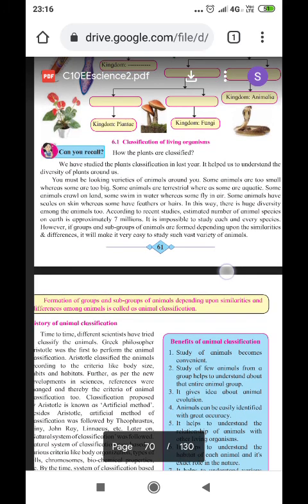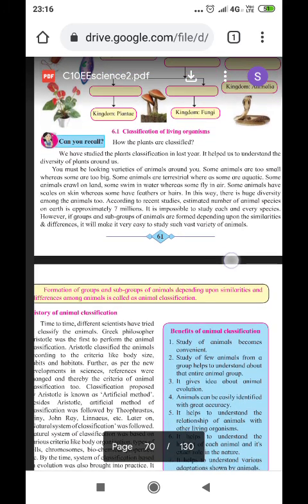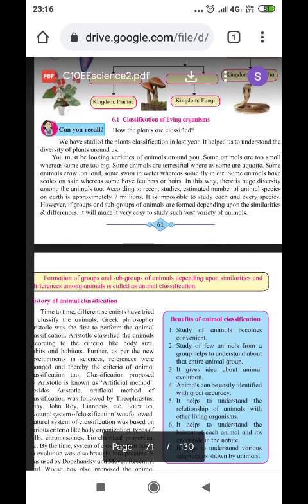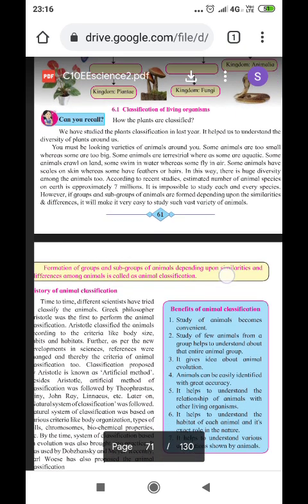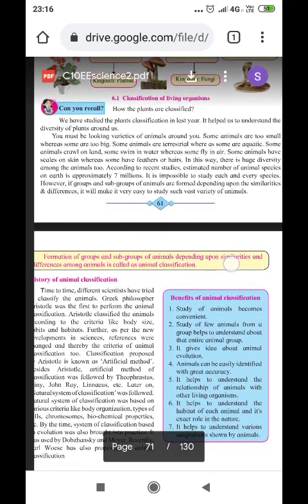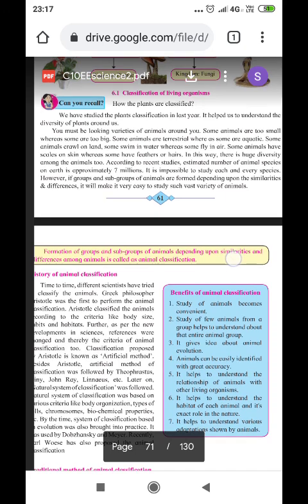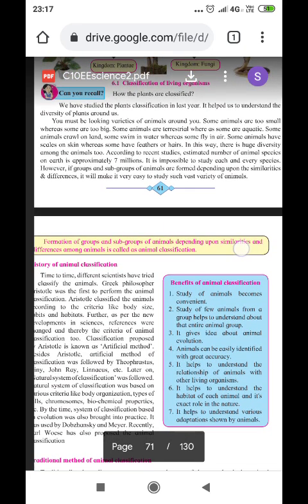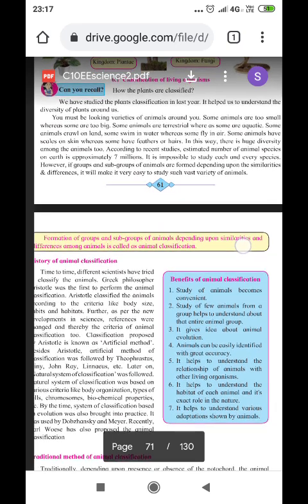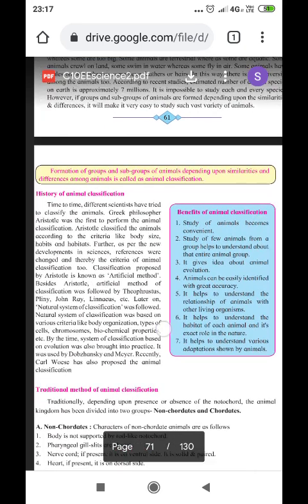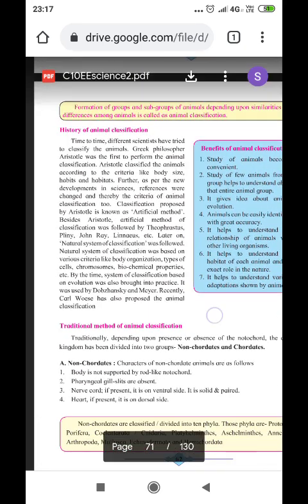In this way, there is a huge diversity among the animals too. According to recent studies, the estimated number of animal species on the earth is approximately 7 million. It is impossible to study each and every species. However, if groups and subgroups of animals are formed, depending upon the similarities and differences, it will make it very easy to study each of the vast variety of animals.